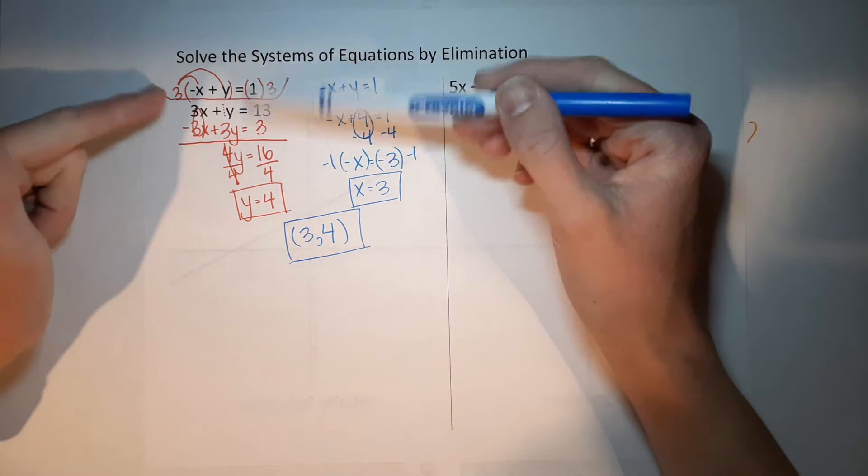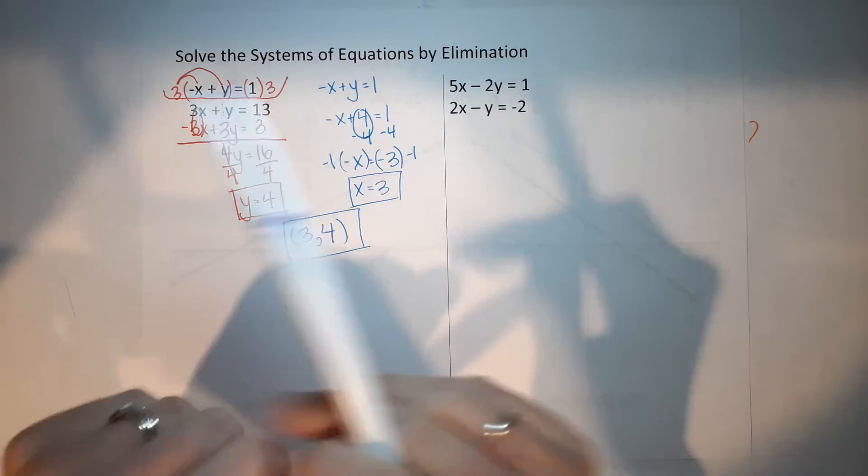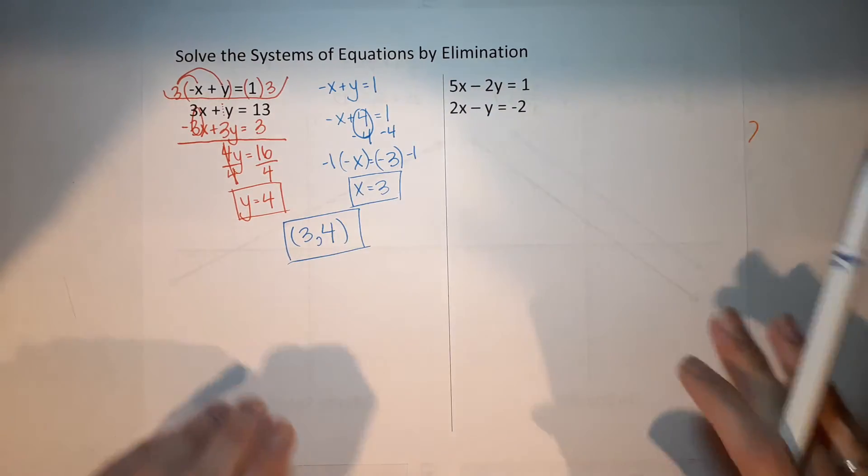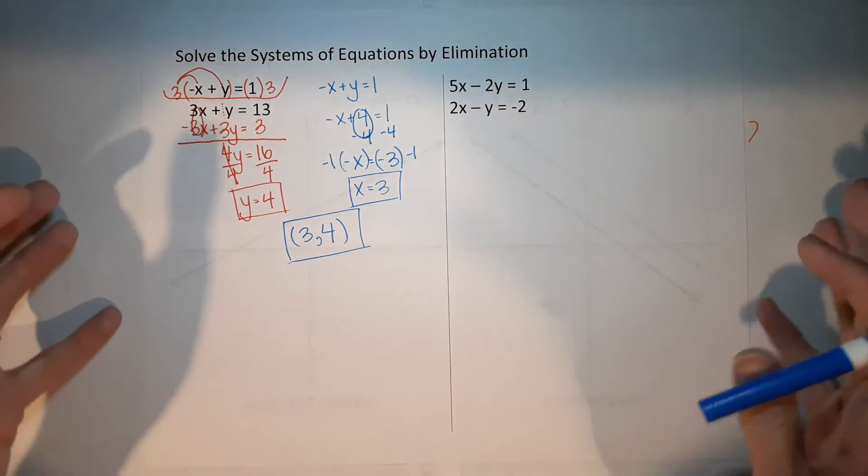Written as an ordered pair it's (3, 4). Let's check: negative 3 plus 4 equals 1 — yes! Three times 3 is 9, plus 4 is 13 — yes! It worked for both. If we were to graph these, they would cross at (3, 4).